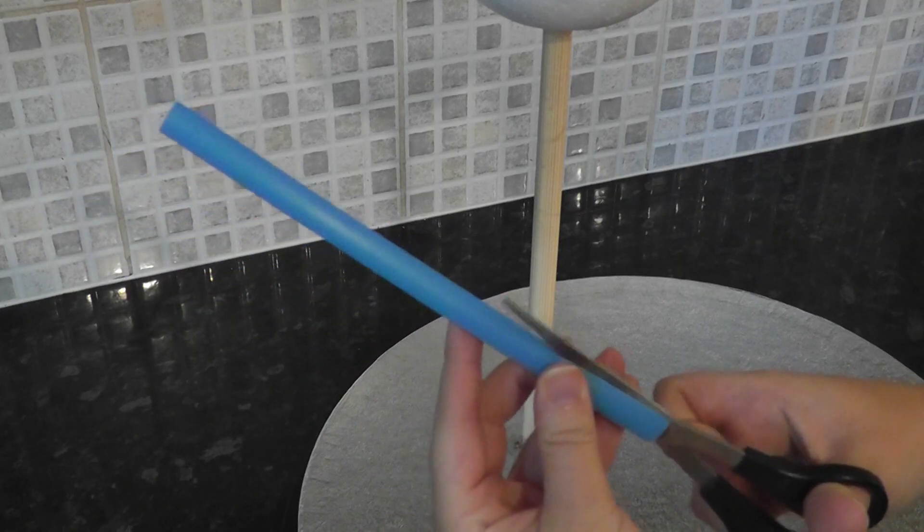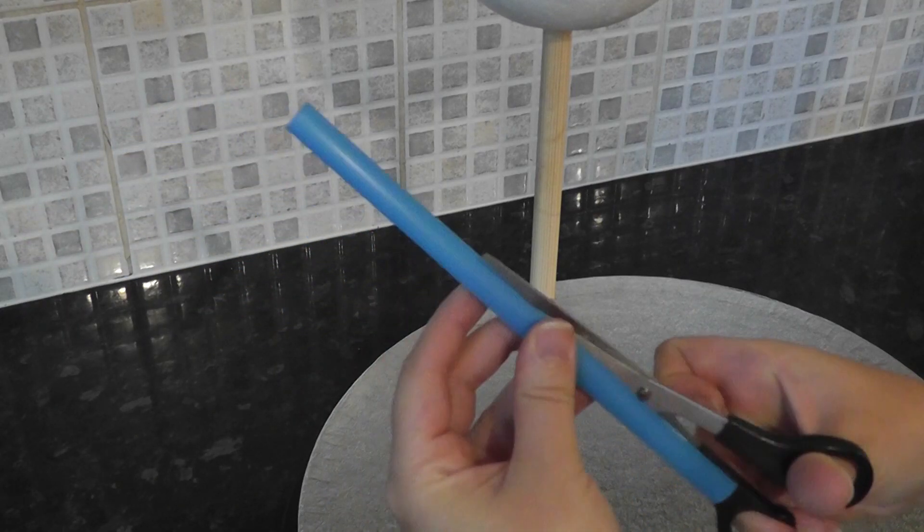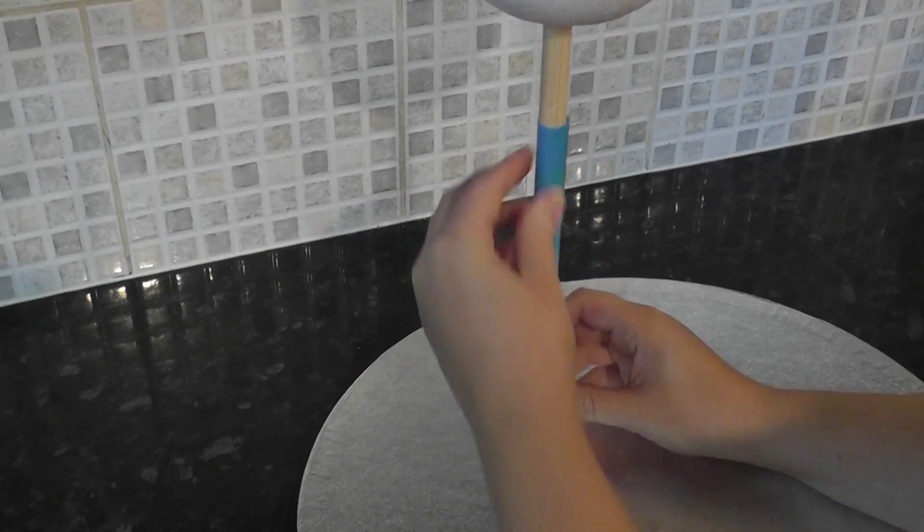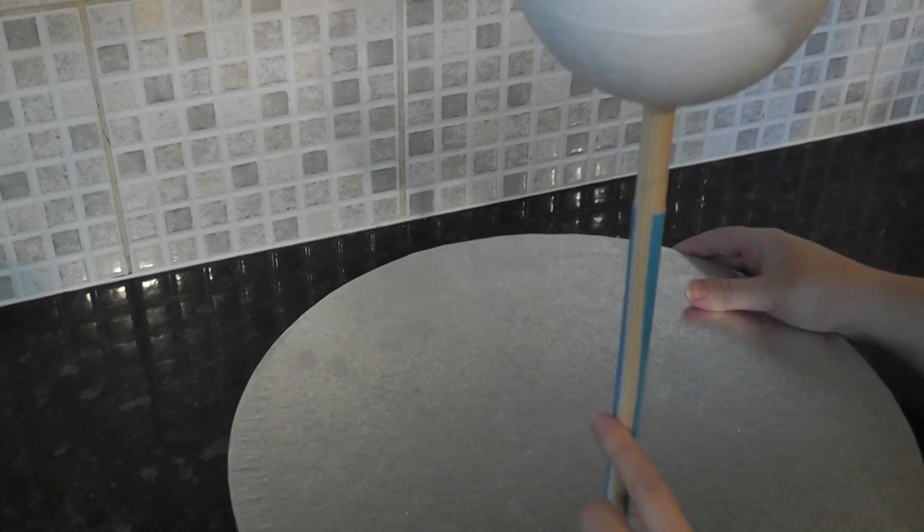To cover the dowel you can use bubble tea straws. I'm just cutting one up the center and wrapping it around. As you can see it's not quite wide enough, so you can just add another one onto the open area and continue up covering the whole stick.